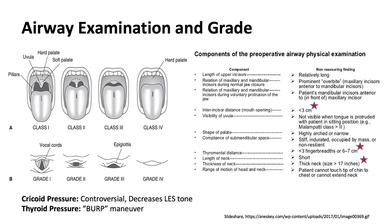Components of the preoperative airway physical exam: interincisor distance — at least three finger breadths of mouth opening; thyromental distance — at least six to seven centimeters or three finger breadths between the thyroid notch and the mentum. Neck circumference greater than 17 inches (or 44 centimeters) is associated with a difficult airway — the thicker the neck, the greater the potential for difficulty.